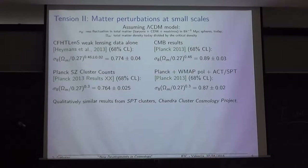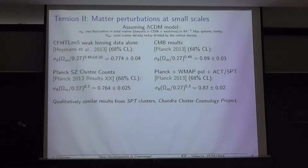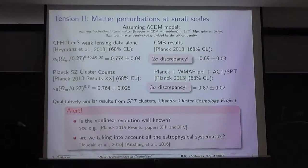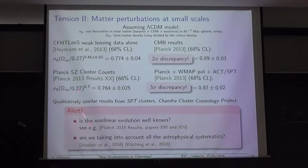Another tension appears for the matter fluctuations at small scales. The fact that the observed universe has less structure at small scales than predicted can be encoded in the σ8 parameter. Here we have local measurements using different methods and estimates from cosmology, giving a two-to-three sigma tension. However, this must be treated with care because the calculations are in a fully non-linear regime, and these measurements may be affected by strong systematics. If one takes everything into account the tension seems to disappear, but future experiments will confirm whether there is a real tension.